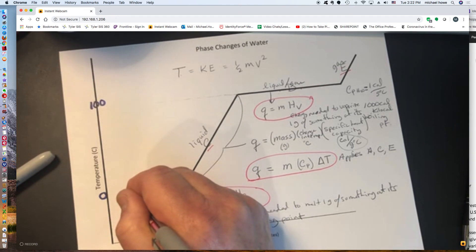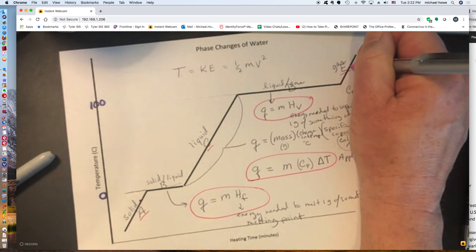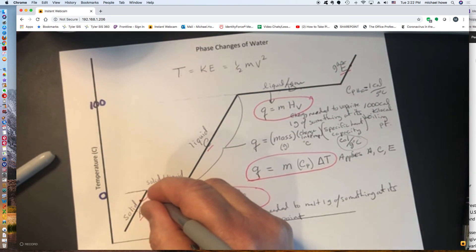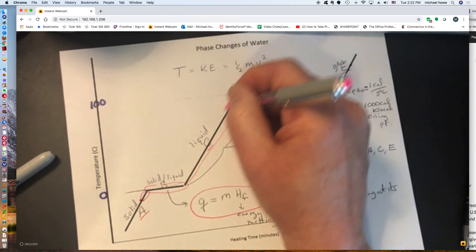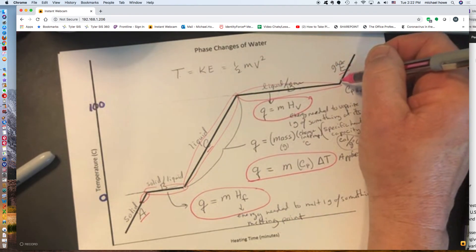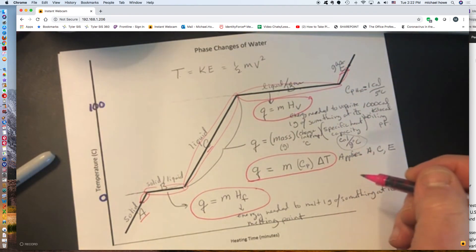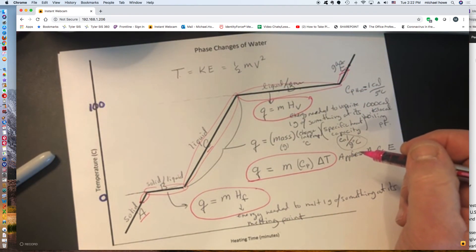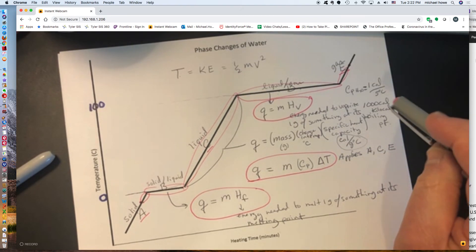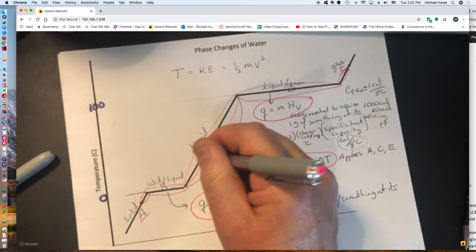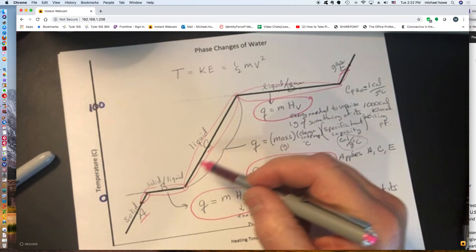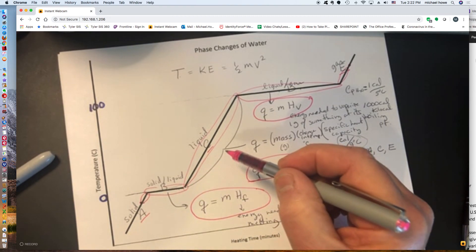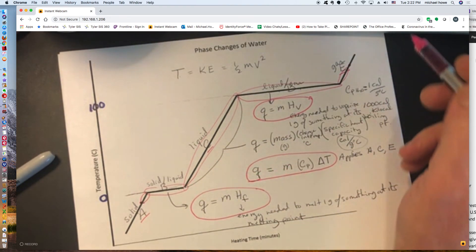So if I wanted to calculate how much energy it took to go from here up to here, I would have to calculate the energy change from here to here, and then across, and then up, and then over, and then up. So there would be five steps in a problem like that. If we just wanted to go somewhere in here, it would just be three steps. So you would find the energy changes and add them together to get the overall energy change.